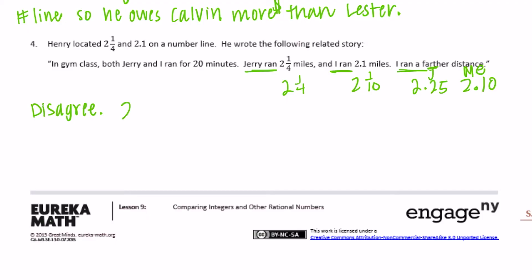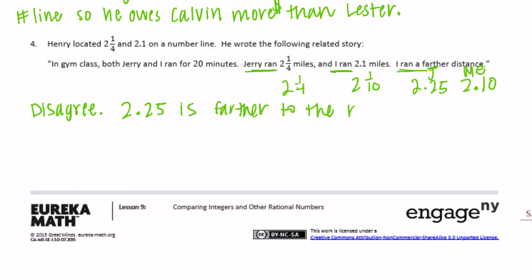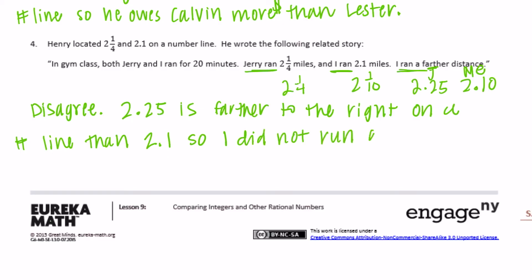Two and twenty-five hundredths is farther to the right on a number line than two and one-tenth. So I did not run a further distance than Jerry.